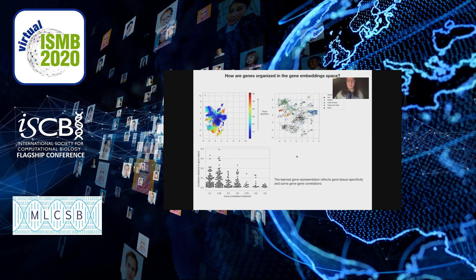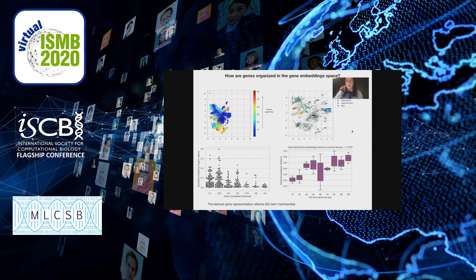Finally, we looked at GO terms — gene sets that represent biological functions or components. Each GO term has a certain gene set size, and we found a relationship between the specificity of the GO term in terms of size and the maximal Euclidean distance. More precise GO terms contain fewer genes and these genes are closer together, while broader GO terms are further apart. We concluded that the learned gene representation reflects some degree of GO term membership.